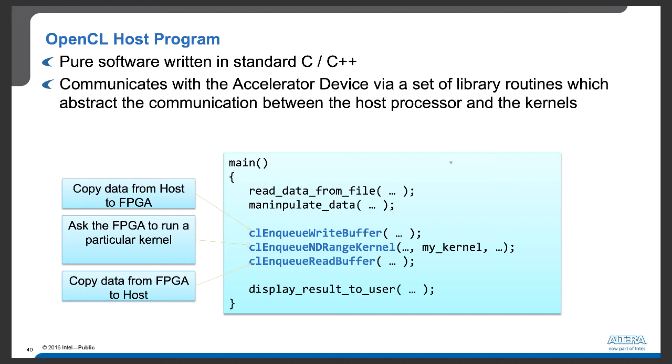As we showed earlier, we have API called clEnqueueWriteBuffer, which copies data from the host to FPGA. And then we have clEnqueueNDRangeKernel, which will ask the FPGA to run a particular kernel.